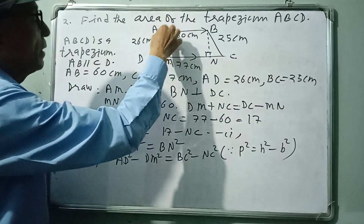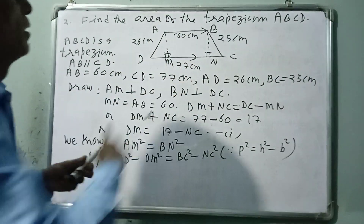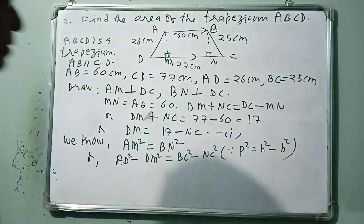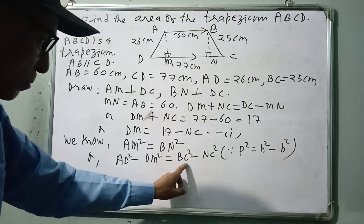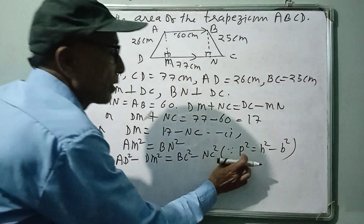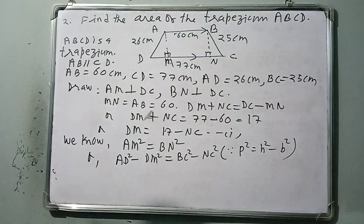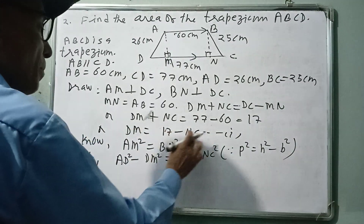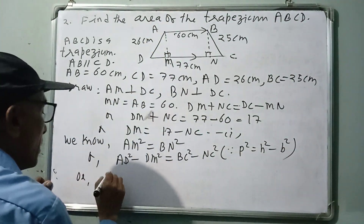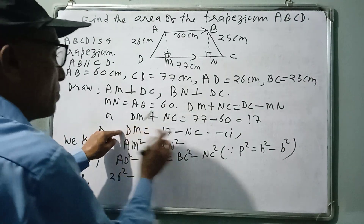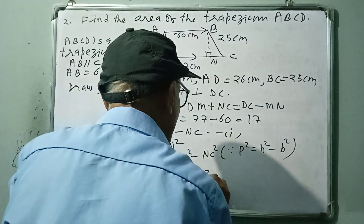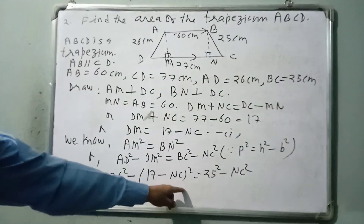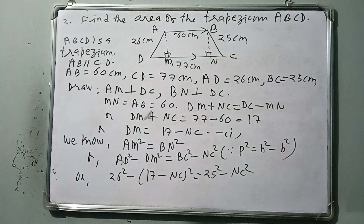In triangle AMD: AM is the perpendicular, AD is the hypotenuse, DM is the base. In triangle BNC: BN is perpendicular, BC is hypotenuse, NC is the base. So AM² = AD² − DM² and BN² = BC² − NC². Substituting DM = 17 − NC: AD² − (17 − NC)² = BC² − NC². AD = 26, BC = 25.